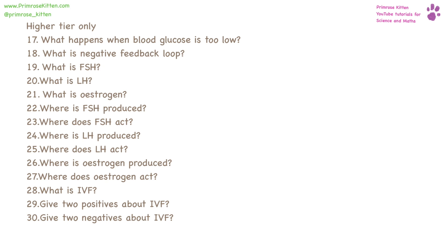The rest of this is for the higher tier only. When blood glucose is too low, the liver converts its stores of glycogen into glucose. A negative feedback loop is when the reaction causes a decrease in the reaction.